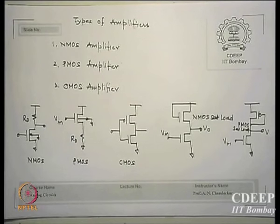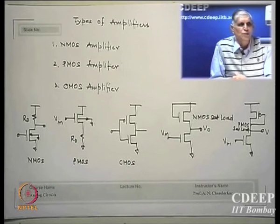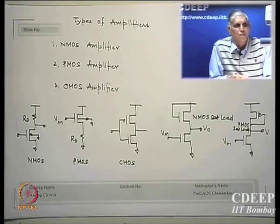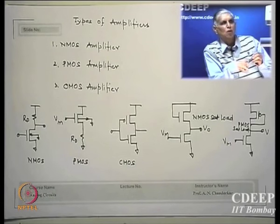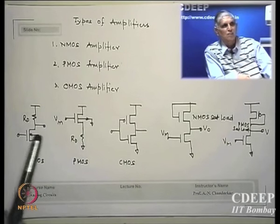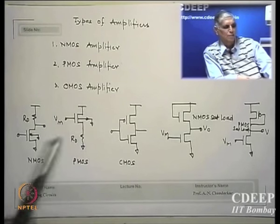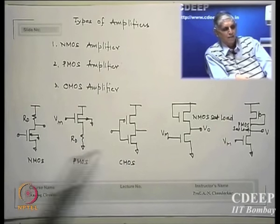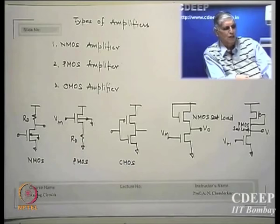Today we shall look into MOS amplifiers. We have already solved one problem, but to give more detail, there can be 3 possibilities of an amplifier made with MOS devices: NMOS, PMOS, and CMOS. The transistor which gives you a gm — where the input is received and which gives gm times something at the output — is called the driver transistor. If it is N-channel, it is called NMOS; if P-channel, PMOS; if both are connected, CMOS.